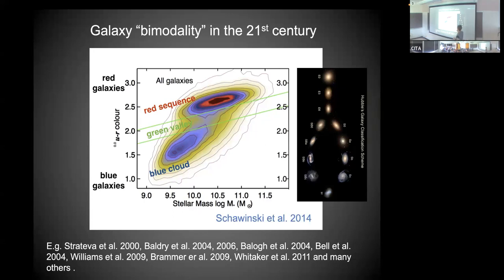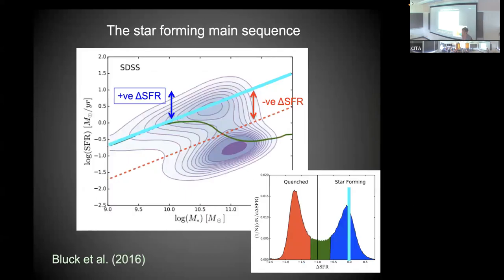Although stellar mass is a true physical parameter, color is really just an observable. As surveys have progressed, it's become more common to replace the y-axis with another physical variable, which is the star formation rate. Again, this kind of plot has been made by many people for many different surveys. We still have stellar mass on the x-axis, and now the rate at which that galaxy is forming stars on the y-axis.